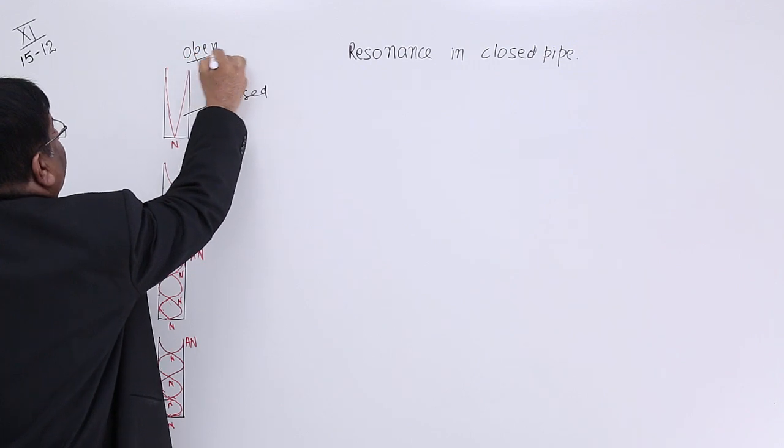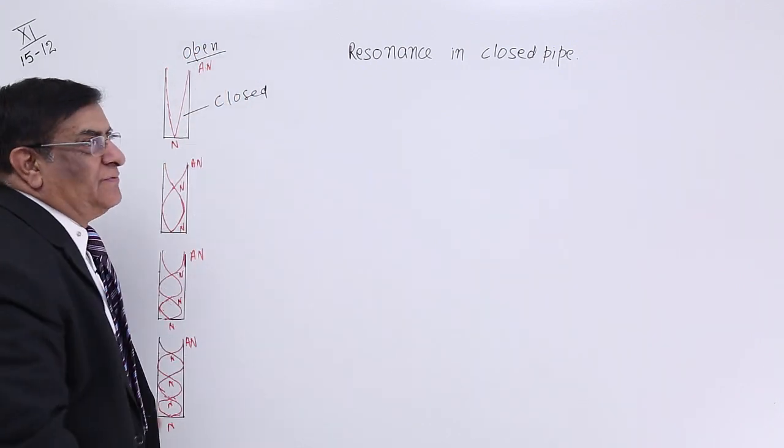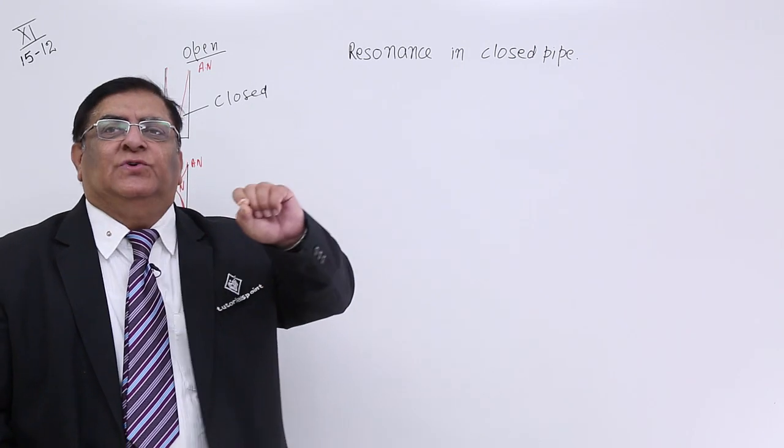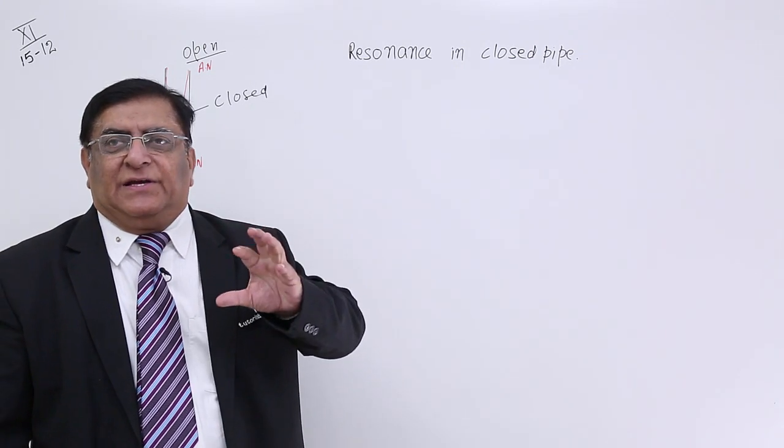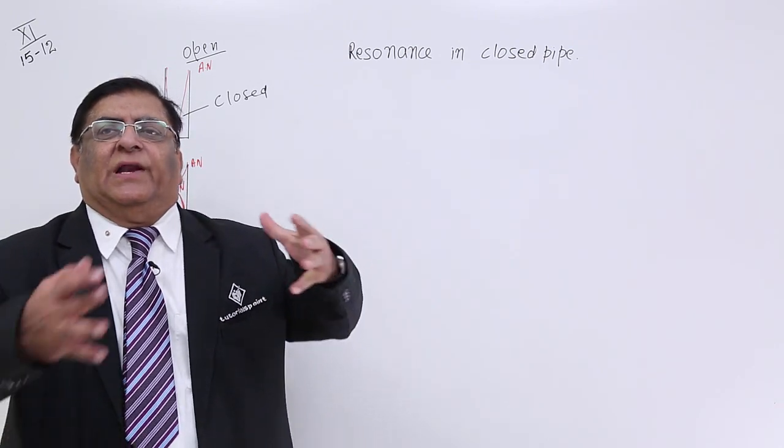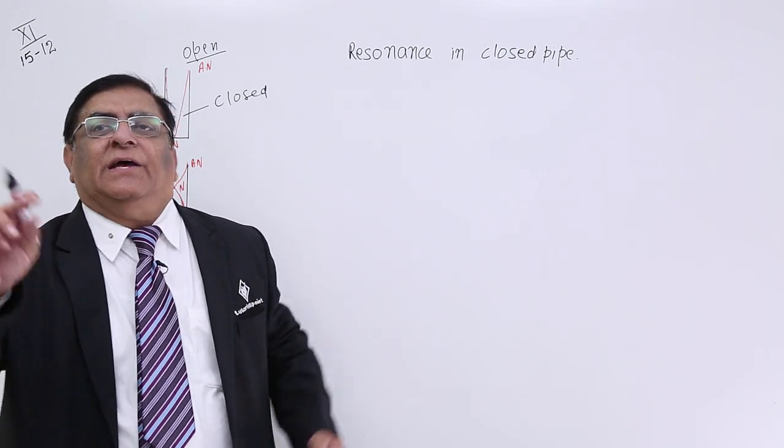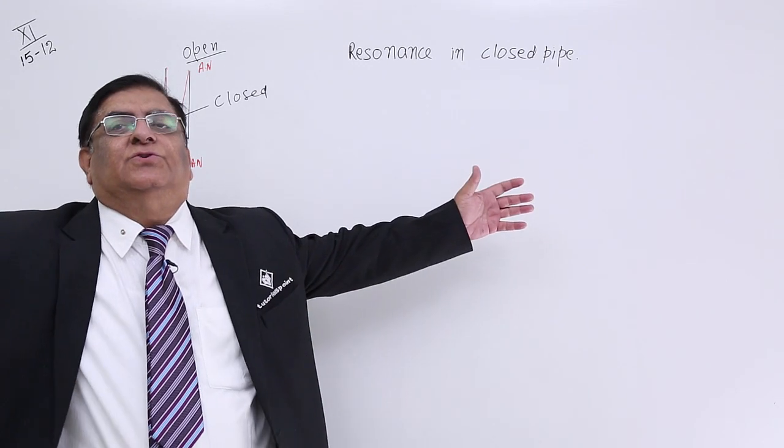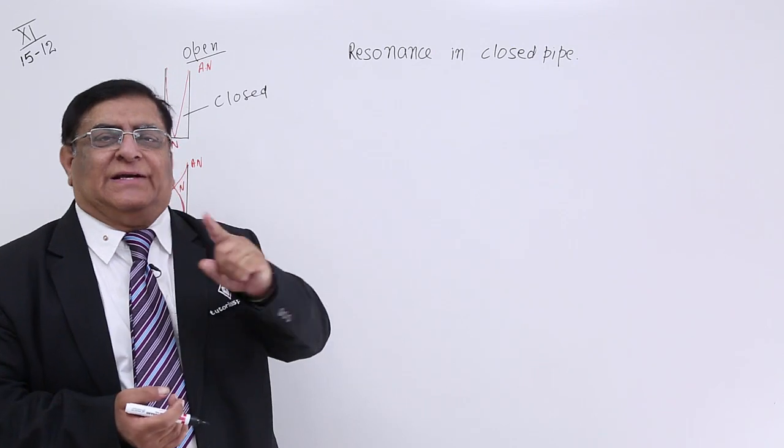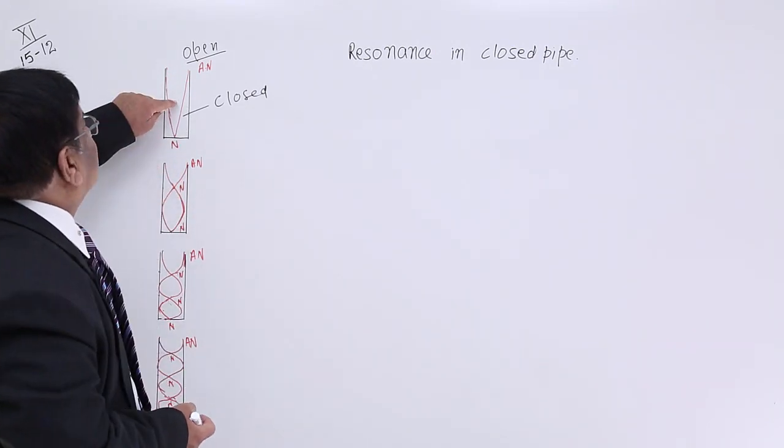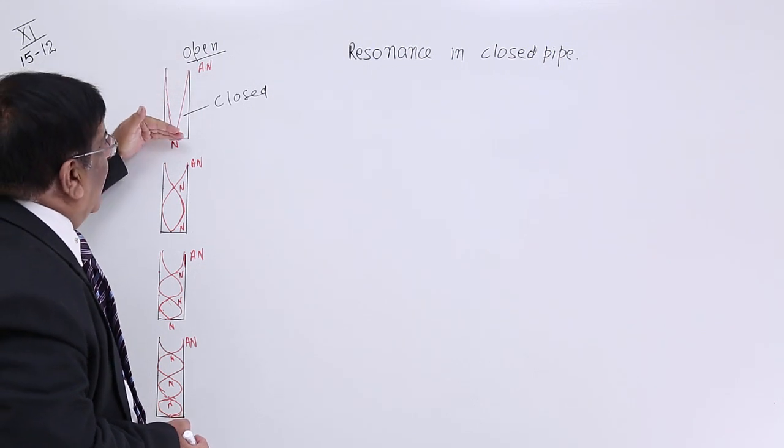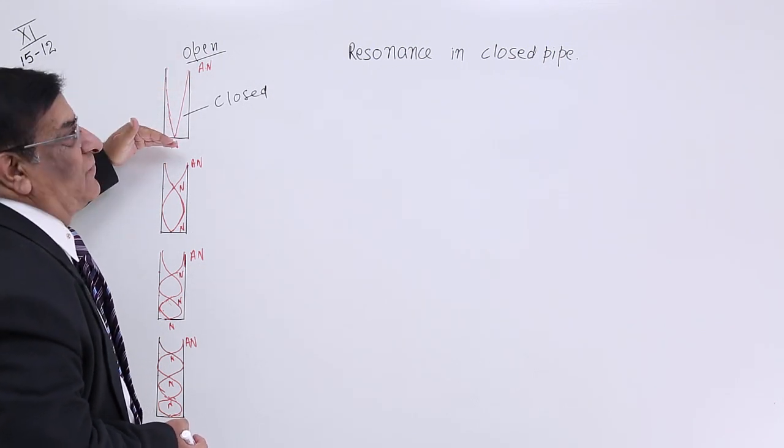You remember when we were studying reflection of the waves, we discussed that denser medium, rarer medium. Denser medium is equivalent to closed medium and rarer medium is equivalent to open medium where air can vibrate to any extent. But in closed medium, there are restrictions. So it is like a denser medium. So denser to rarer, when the waves are traveling, there are certain reflections and due to that reflection,